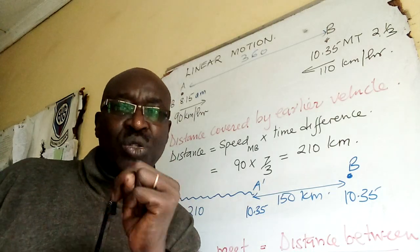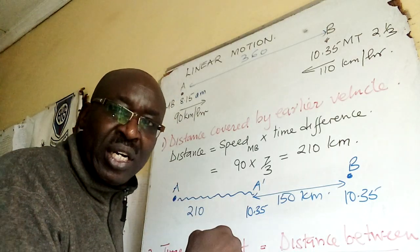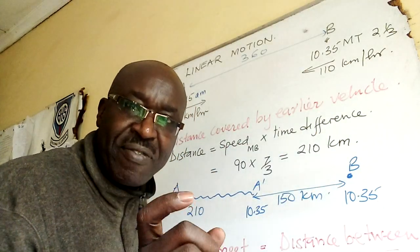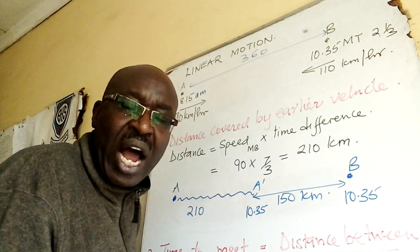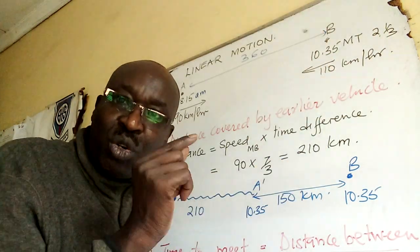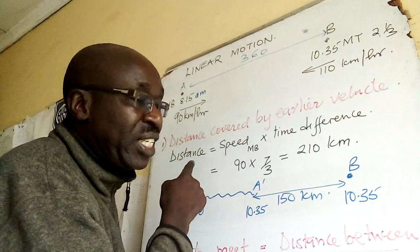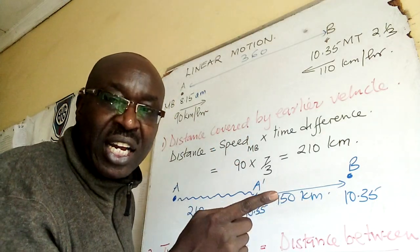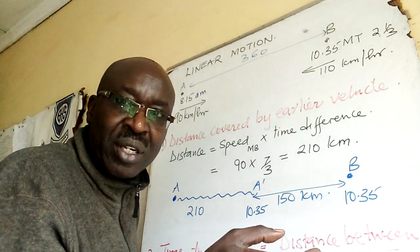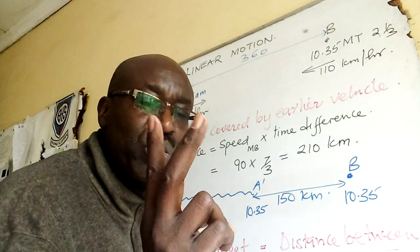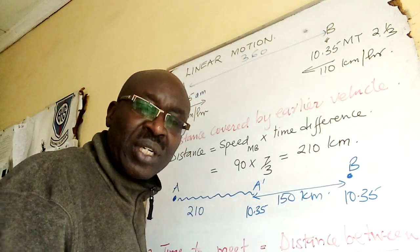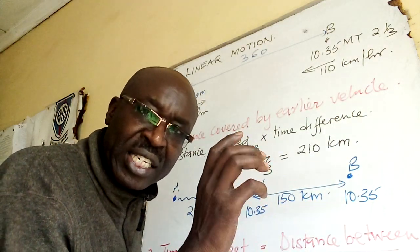This has two versions. You can be told this much time later - that is what I'll be calling time difference. Or I would have given you: matatu left B at 10:35. So 10:35 minus 8:15, that is 2 hours 20 minutes.